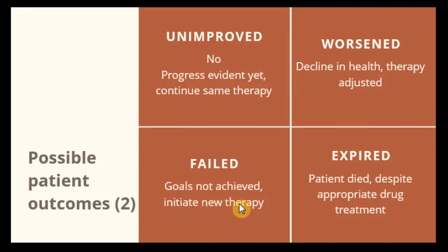For example, in patients in a fragile state where drug therapy is not planned to be aggressively adjusted, the patient may continue with the same therapy even though no progress is evident — but monitoring is still very much needed. Sixth is 'worsened,' when there is a decline in health and the therapy needs to be adjusted. Seventh is 'failed,' when goals are not achieved and new therapy needs to be initiated. Eighth is 'expired,' when the patient has died despite appropriate drug therapy management — though the patient may die due to other reasons as well.